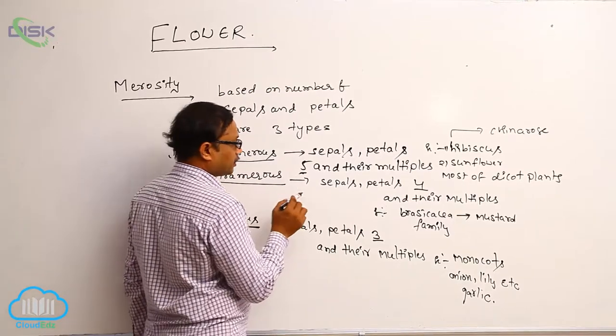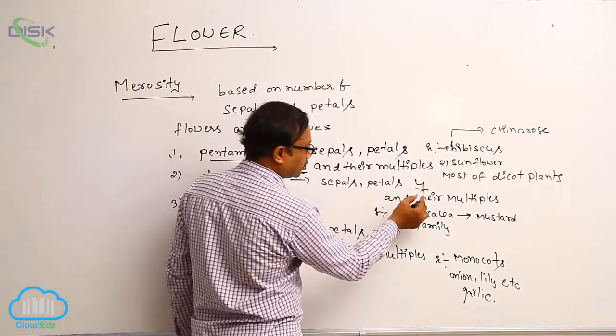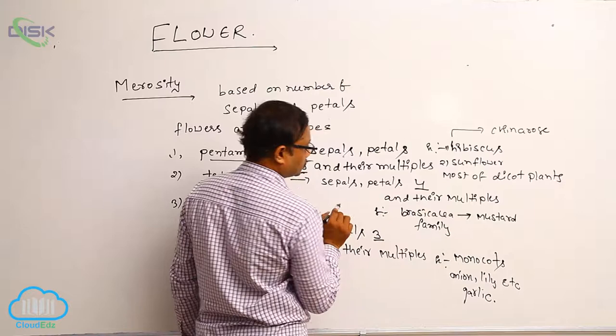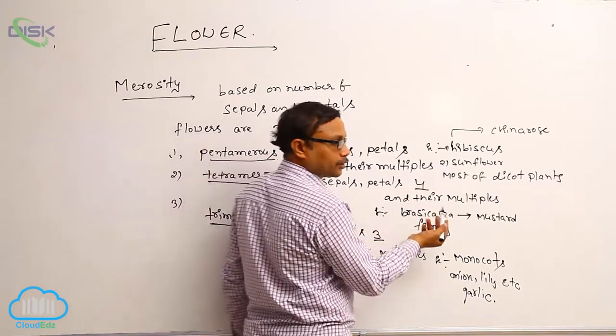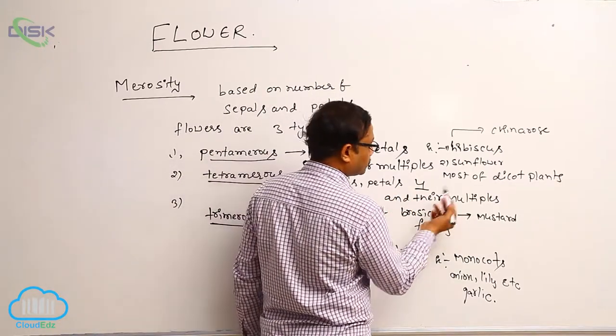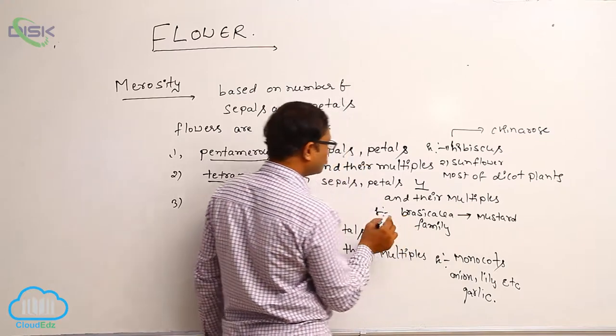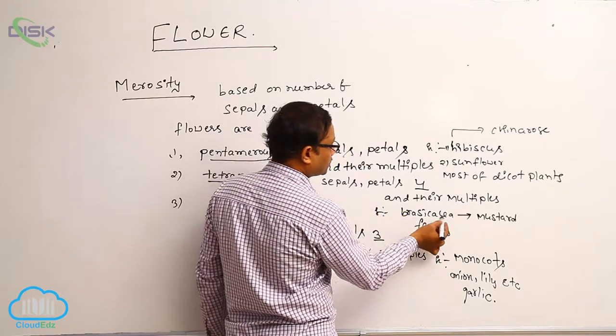Tetrameras. Tetrameras means sepals and petals four and their multiples. And their multiples means four, eight, twelve, sixteen, just like that. Example, brassicaceae family.